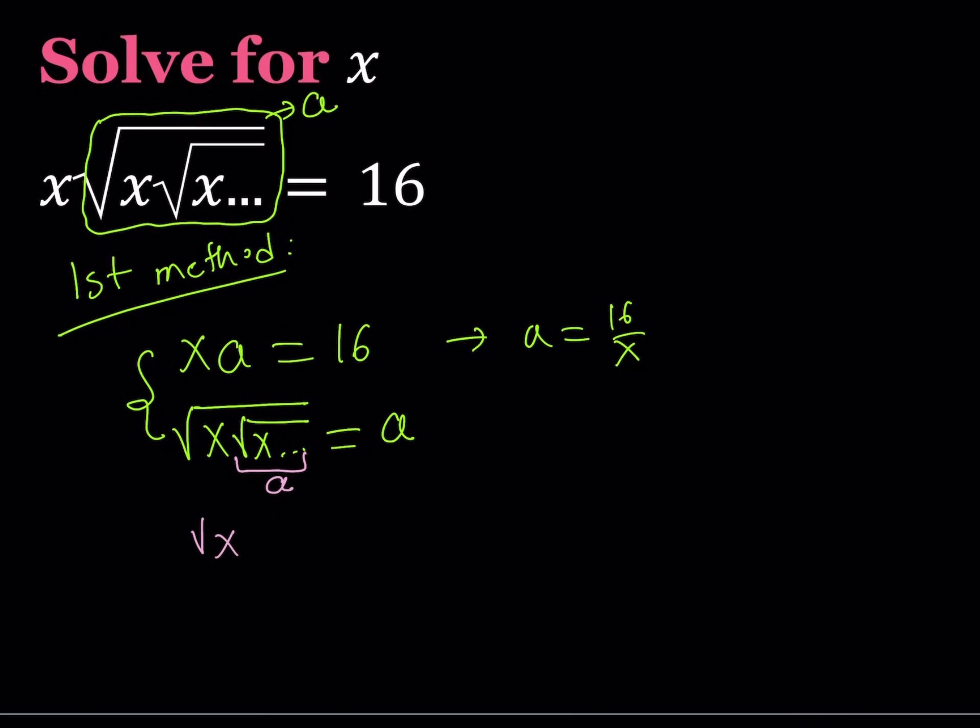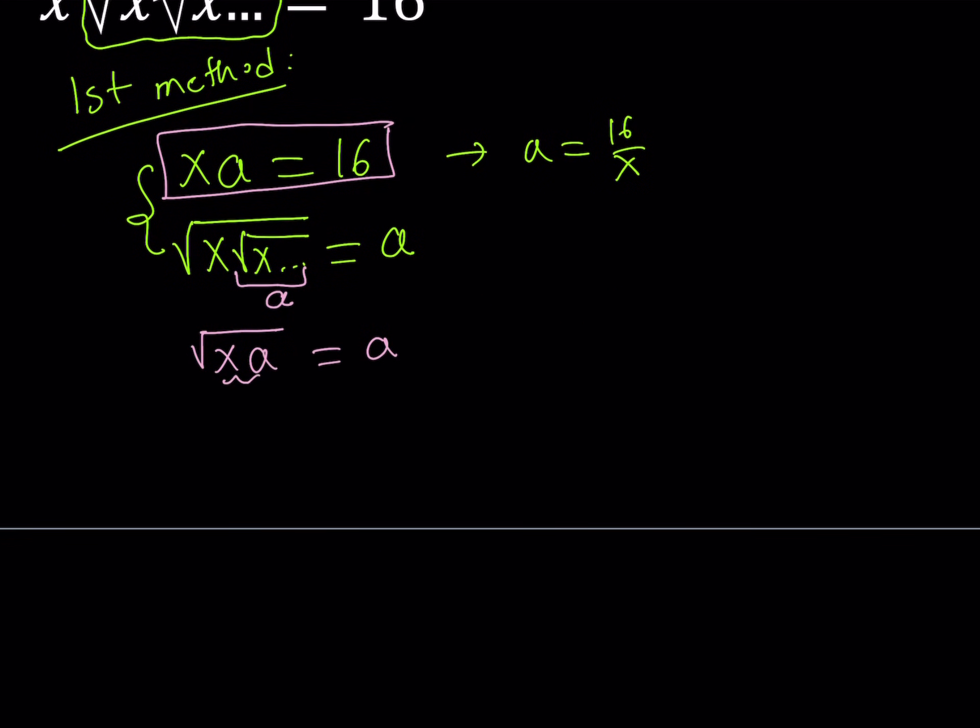So we get something like the square root of xa equals a. But we know that xa is equal to 16. So I can just go ahead and replace xa with 16. The square root of 16 is just going to be 4. This gives us a equals 4. But we also know that their product is 16. Therefore, x equals 4 from here.